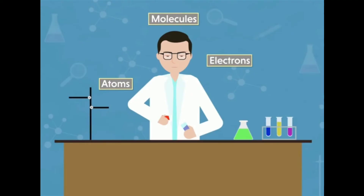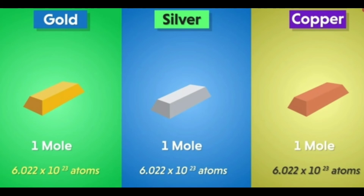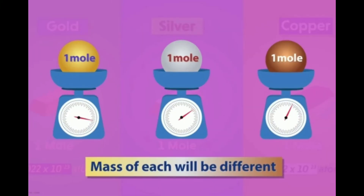Avogadro's number is used by scientists in the case of microscopic particles such as atoms and molecules. Now, you know 1 mole of gold, silver, and copper each consists of 6.022 × 10²³ particles, but their masses are different. So the mass of 1 mole of a substance also differs. This term is known as molar mass.